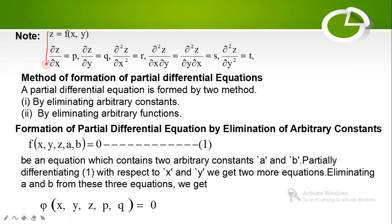These are the useful notations. Suppose z is a function of x and y. We denote ∂z/∂x (partial derivative of z with respect to x) as p, and ∂z/∂y (partial derivative of z with respect to y) as q. Then ∂²z/∂x² = r, ∂²z/∂x∂y = s, and ∂²z/∂y² = t. So p = ∂z/∂x, q = ∂z/∂y, r = ∂²z/∂x², s = ∂²z/∂x∂y, and t = ∂²z/∂y².